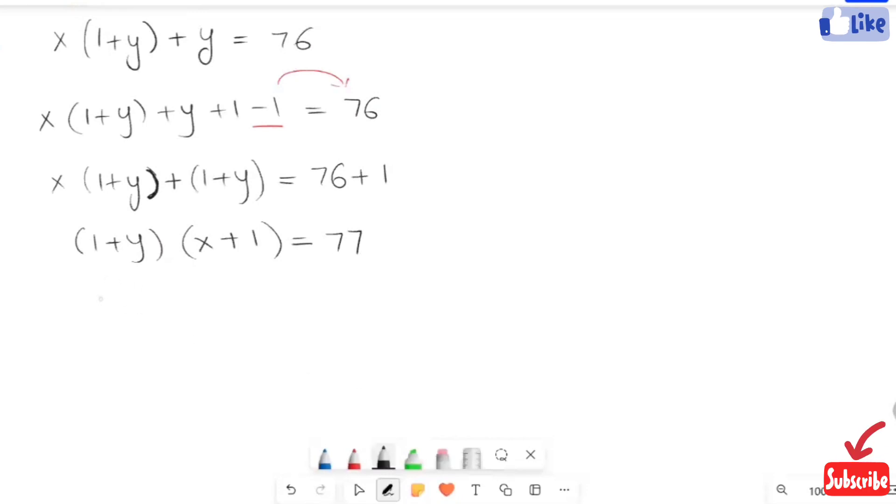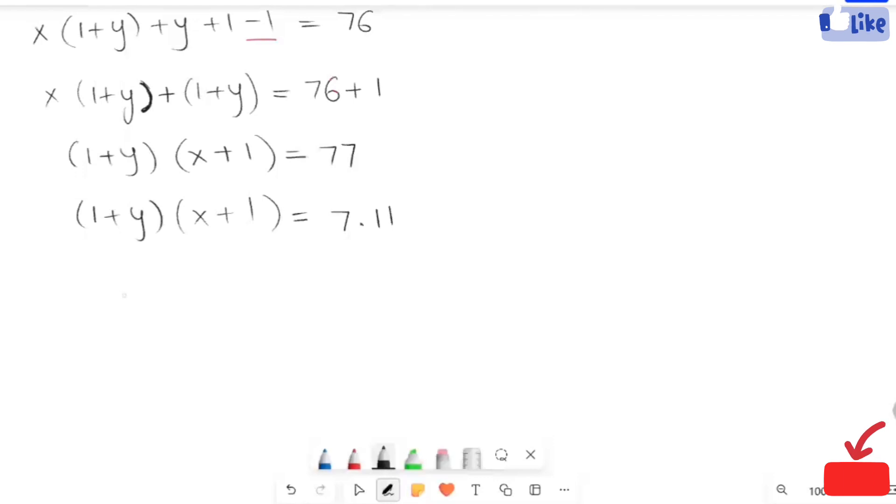The next step, I'm going to write this 77 in the form of factors, that is 7 times 11 gives you 77. I'm going to write 1 plus y equals 7 and x plus 1 equals 11.